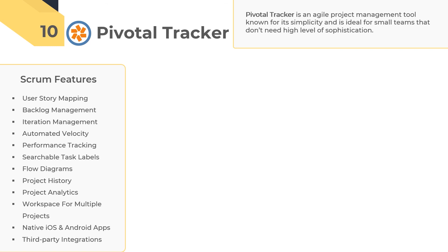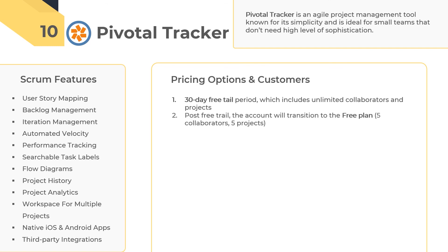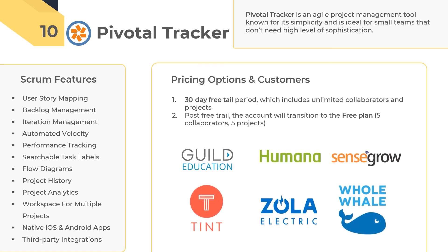Other noticeable features this Scrum tool comes with are user story tracking, iteration management, automated velocity, multiple performance tracking reports, and 140 plus third-party application integrations. Pivotal Tracker offers a 30-day free trial period which includes unlimited collaborators and projects. Post-completion of the free trial period, the account will automatically transition to the free plan, which includes teams of up to five collaborators and five private projects. You can upgrade to larger plans at any time. Some of the organizations that use Pivotal Tracker to deliver better products are BBC, Guild Education, Humana, Zola Electric, 729 Solutions, and others.